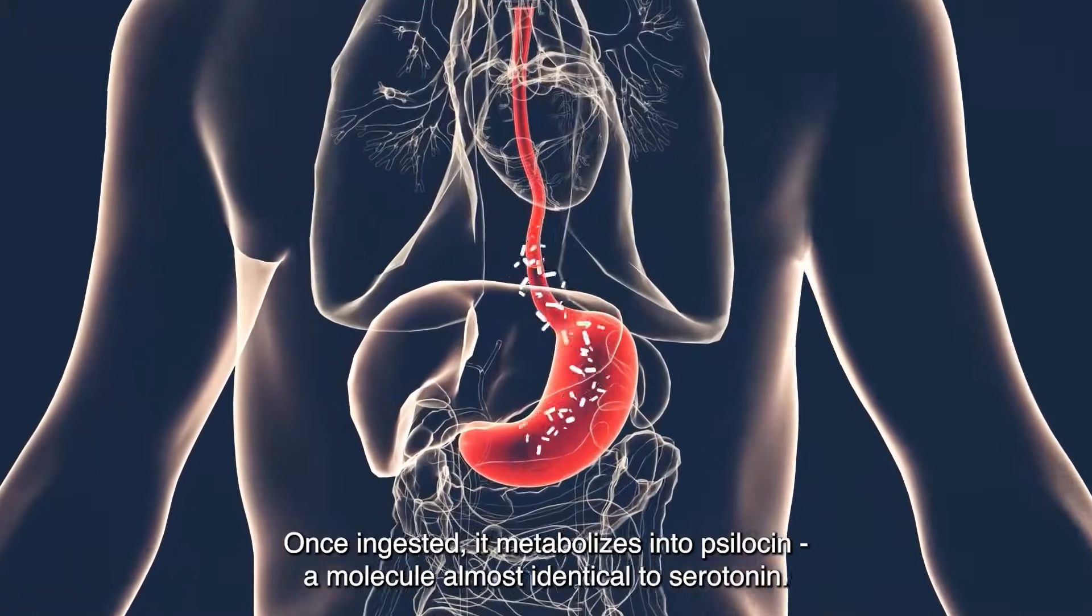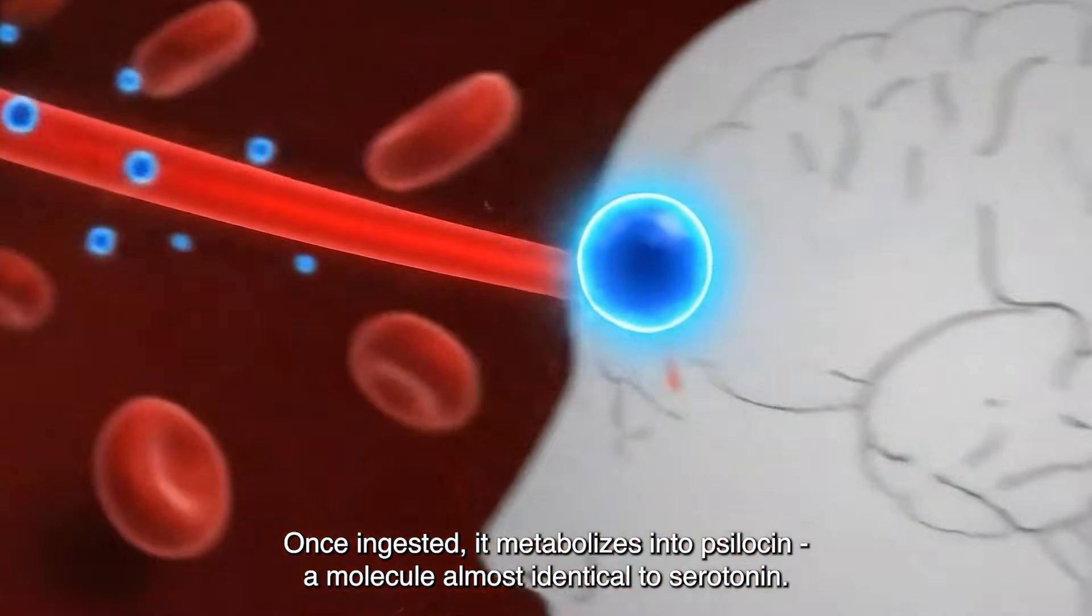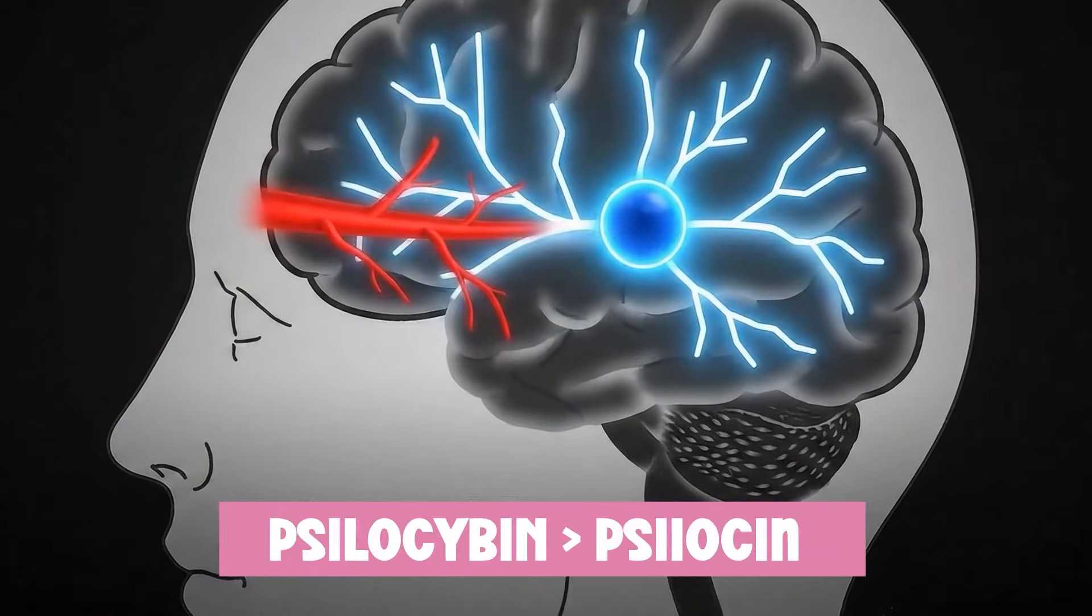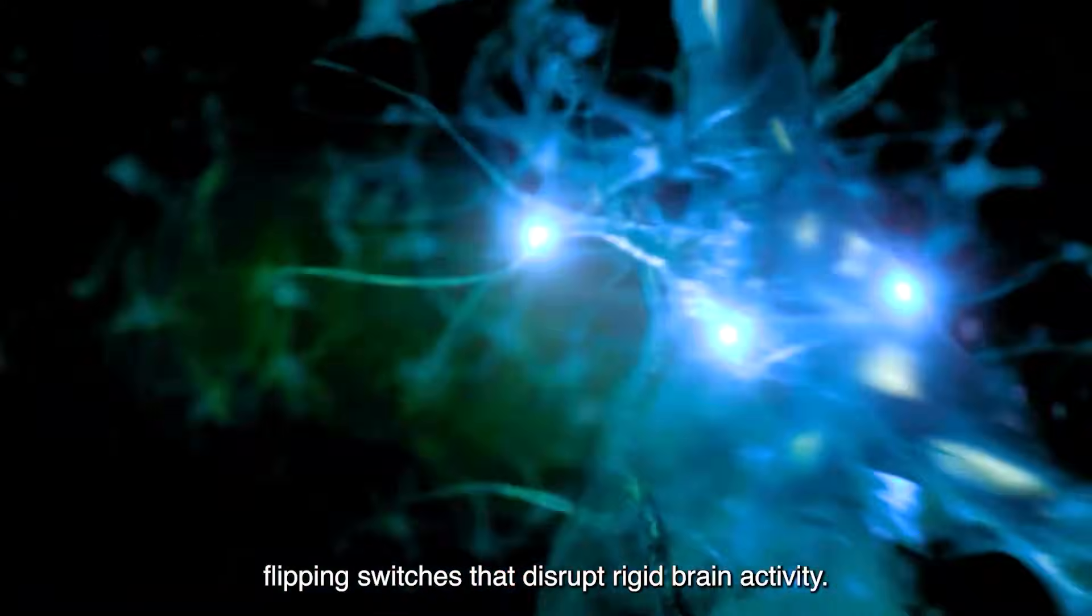Once ingested, it metabolizes into psilocin, a molecule almost identical to serotonin. Psilocin binds to special receptors on neurons, flipping switches that disrupt rigid brain activity.